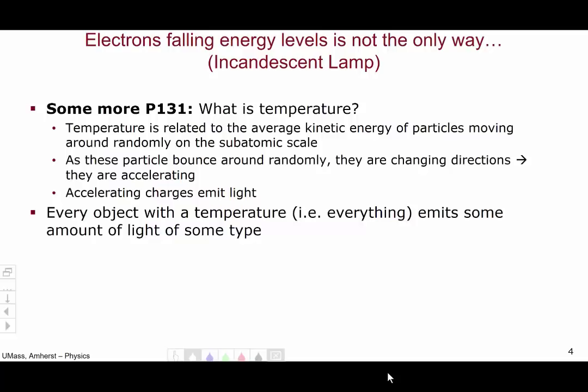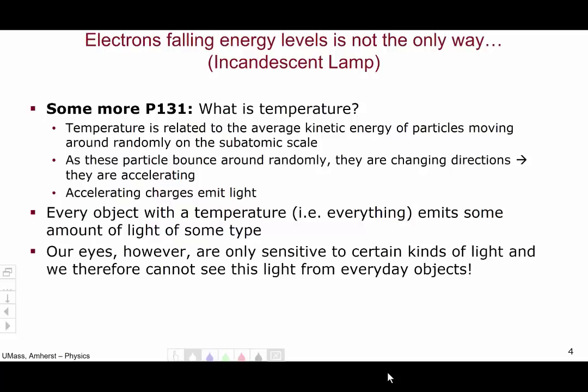So in summary, every object with a temperature, i.e. everything, will emit some amount of light of some type. Our eyes, however, are only sensitive to certain kinds of light, and we therefore cannot see this light from everyday objects such as you and I. We don't see light coming off of us because our eyes are not sensitive to the kind of light that we emit due to our temperature. However, we can build devices that can see the light given off by more everyday objects such as people by using technologies such as infrared cameras.